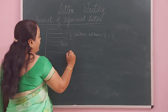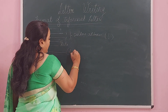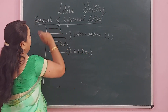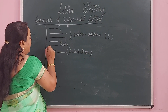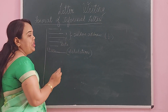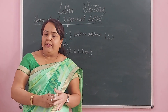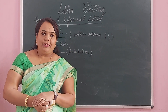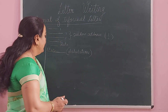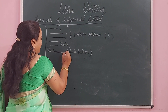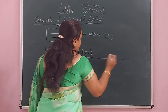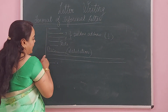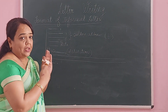Then comes salutation. Since this is an informal letter, the salutation will obviously be 'Dear,' followed by the name or relation — for example, Dear Mama, Dear Papa, or the name if you are writing to your brother or sister — followed by a comma. Then your letter starts. As it is in block form, everything should be aligned to the margin.